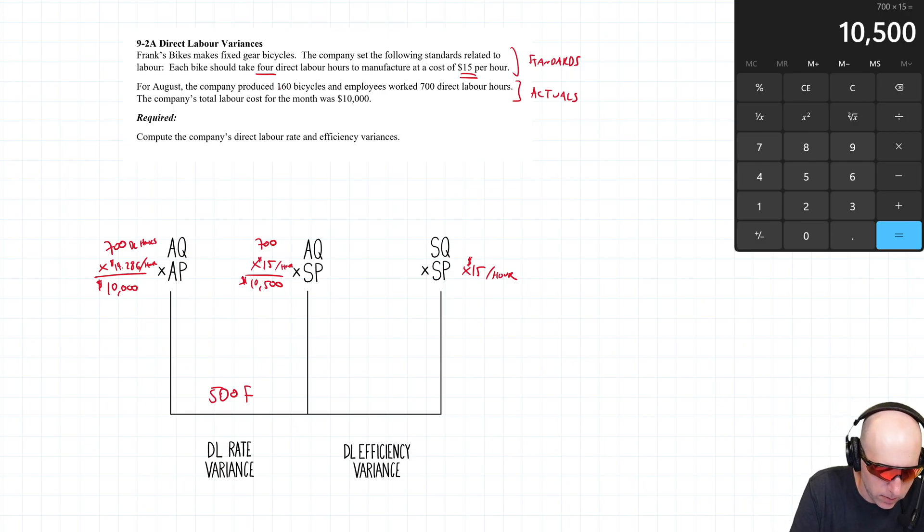Given the fact that I made 160 bikes, how many hours should it have taken? The answer is four hours per bike. This should have taken 640 direct labor hours.